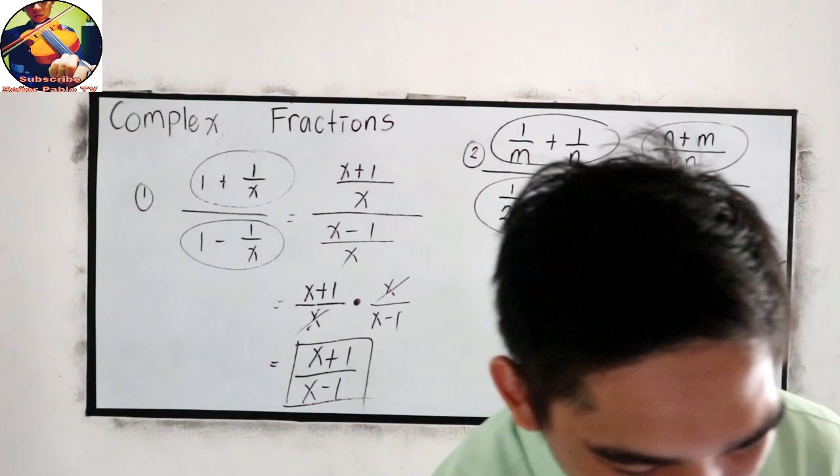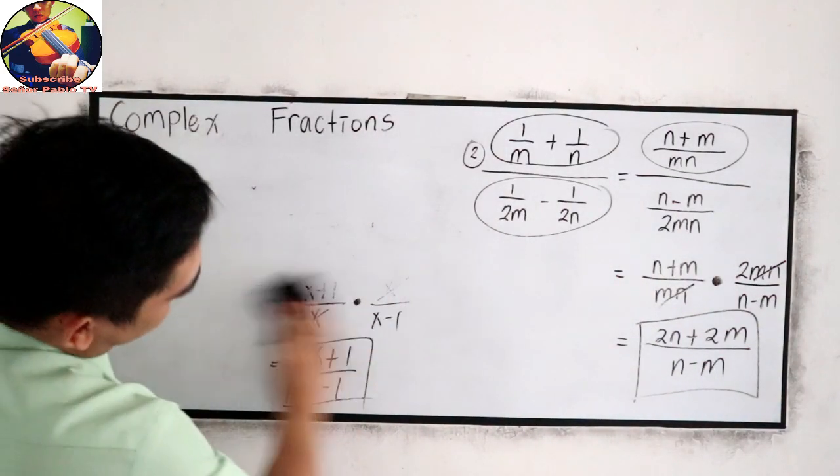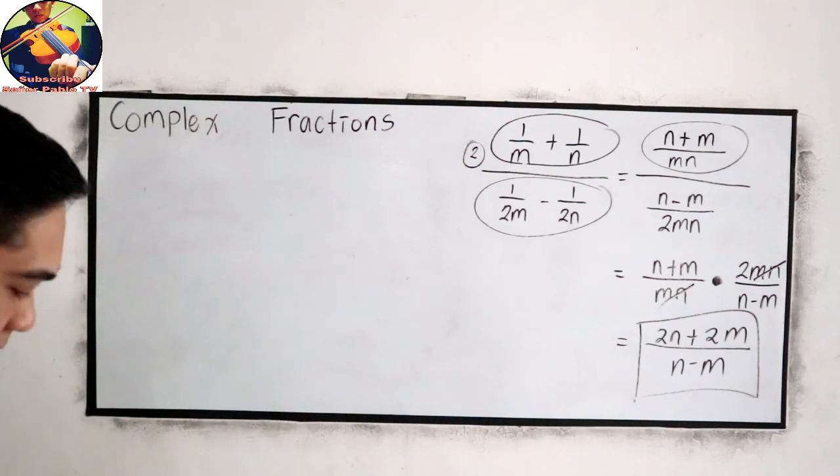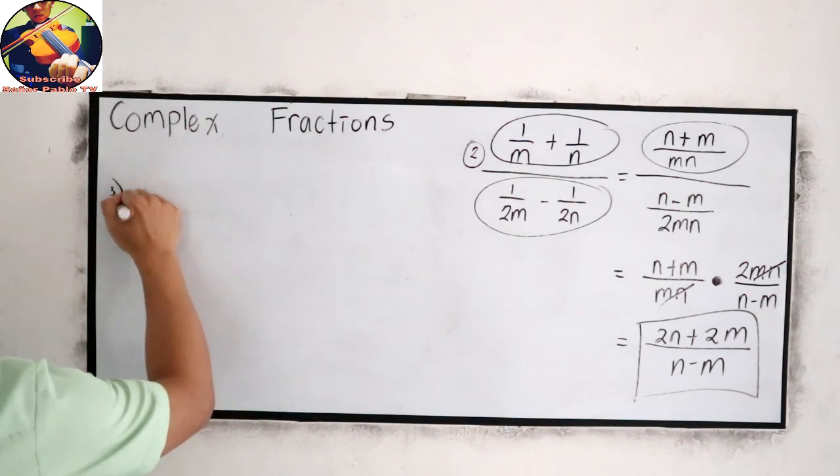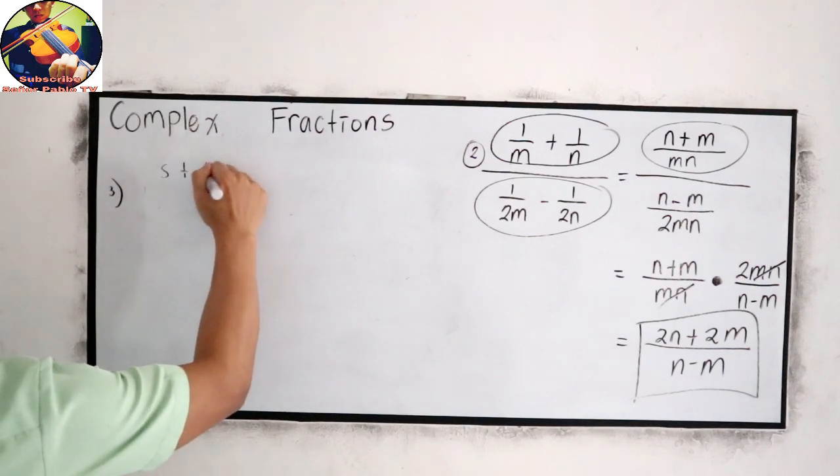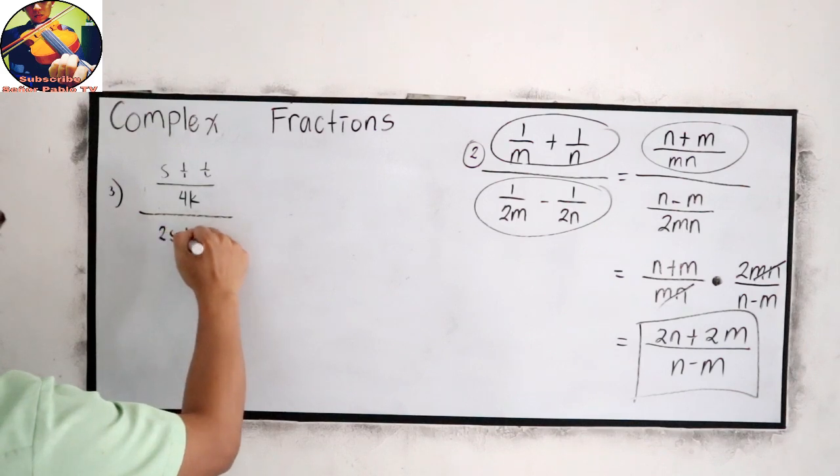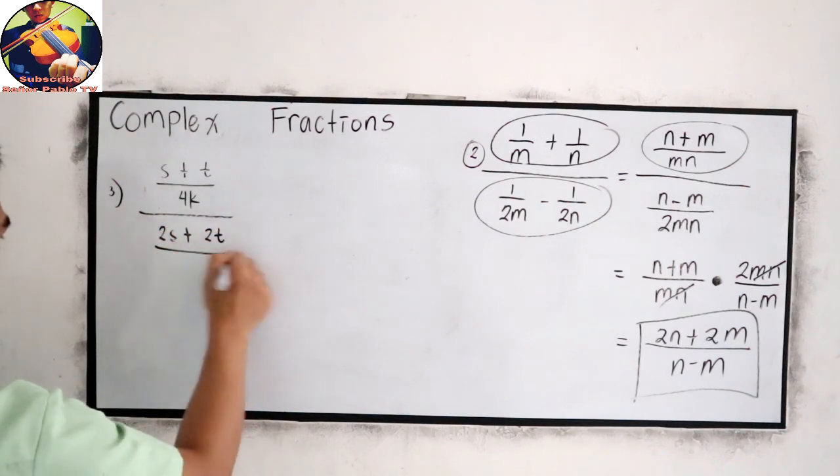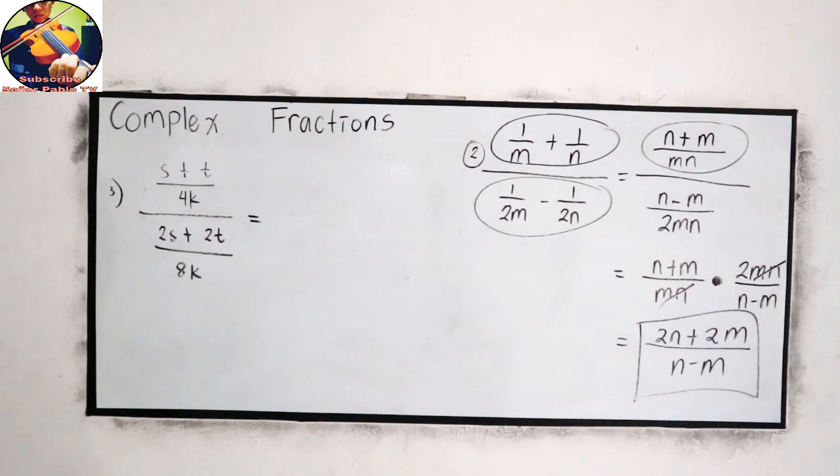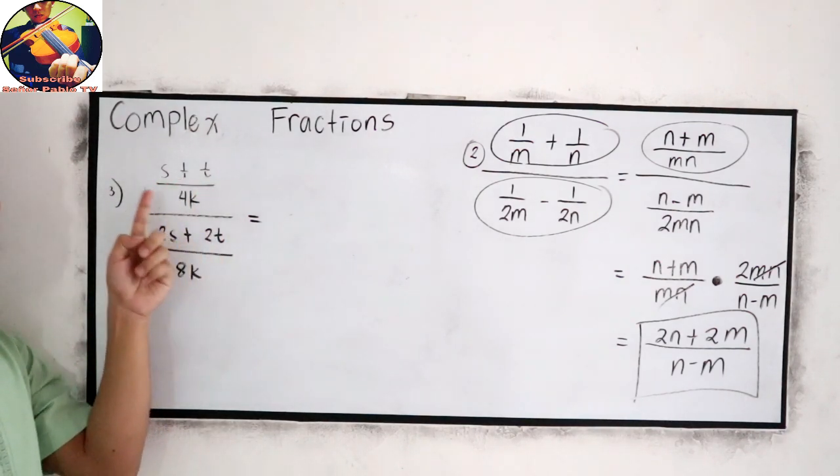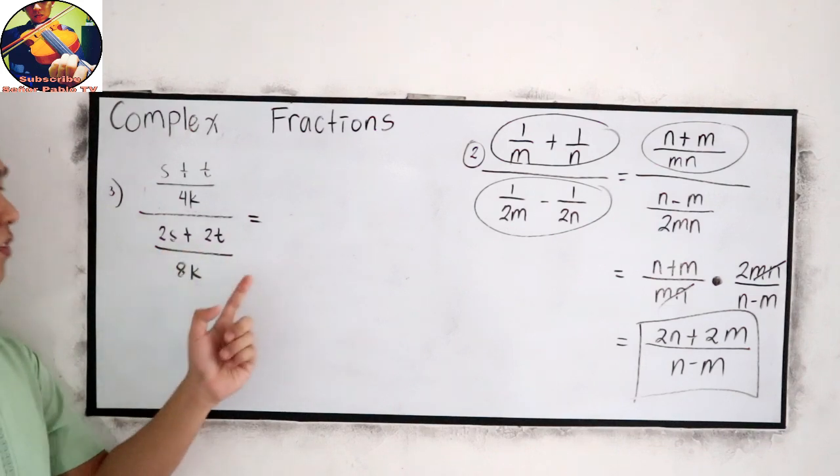Now I want you to try this number, number three. Let's try number three. Okay, now try number three. S plus t over 4k all over 2s plus 2t all over 8k.